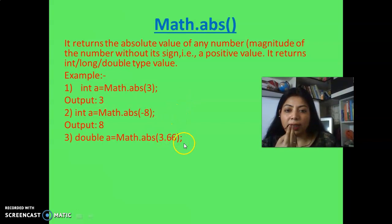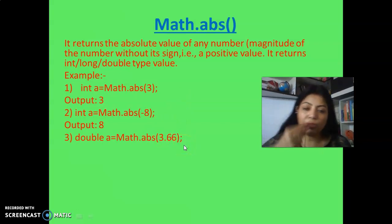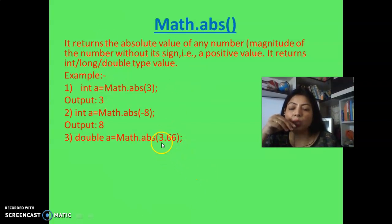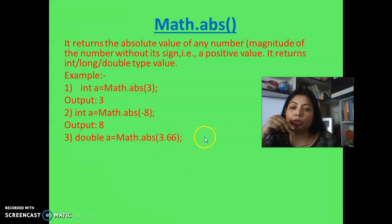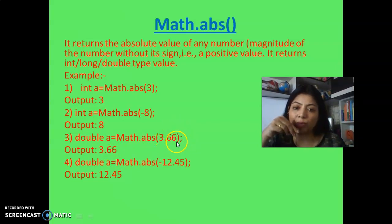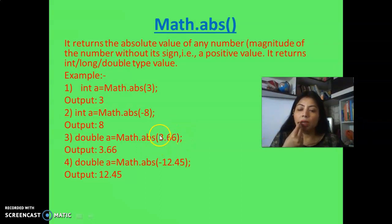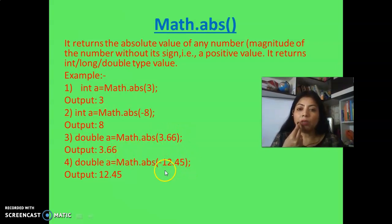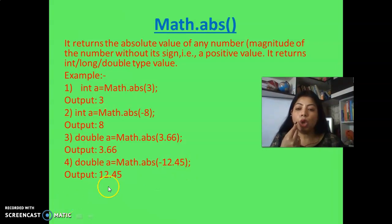There is a common confusion: if the value is 3.66, students might think it returns 4 through rounding. But absolute value only discards the sign — nothing else. So Math.abs(3.66) returns 3.66 only. Don't write down the rounded number. Write the exact number, because it is positive. For a minus fractional number like Math.abs(-12.45), it shows 12.45 — just discard the sign, not the fractional part.